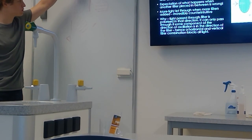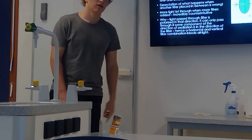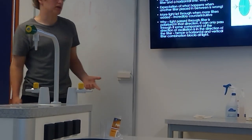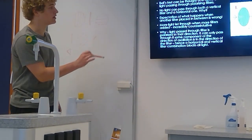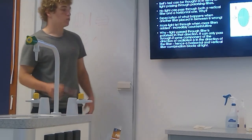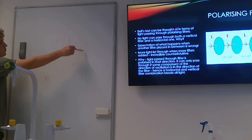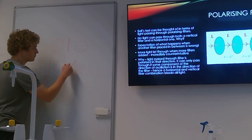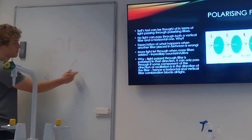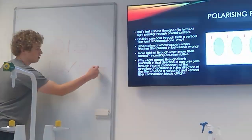But what if you then put a 45 degree filter in the middle? The expectation would probably be that still no light comes through, because you've still got these two filters and no light comes through. What actually happens is you get more light coming through when the filter is added. The light is being polarised in this new direction, so it then has a component in the horizontal direction and you can polarise it horizontally as well.